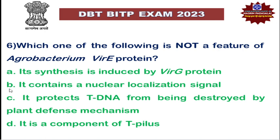The first option: its synthesis is induced by Vir-G protein. Yes, that is correct because Vir-G is responsible for transcribing all the Vir genes. Next, it contains a nuclear localization signal. Yes, Vir-E will be containing a nuclear localization signal.